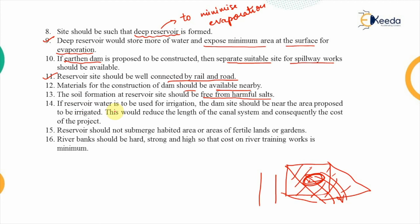If the reservoir water is to be used for irrigation purposes, the dam site should be near the area proposed to be irrigated. The cost of supplying water to the irrigation area should not be excessively high. If the dam is available near the irrigation site, it reduces the length of the canal system and consequently reduces the overall cost of the project.